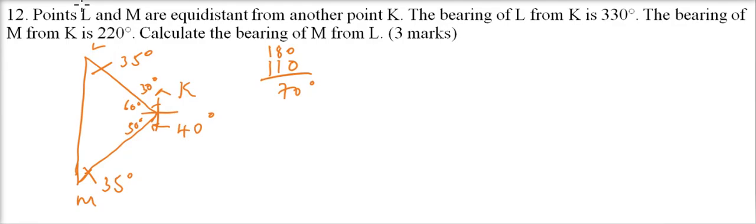Now, there's something that we need here. We need to make a compass here, because we need to find the bearing of M from L. So since this angle is 60, it means this angle here is 60. And this angle is 35. So if you add, this angle is 35, and that is the bearing of M from L.